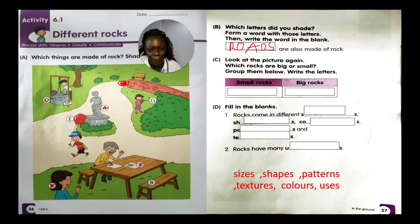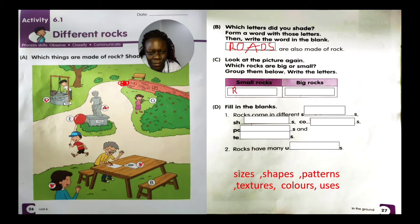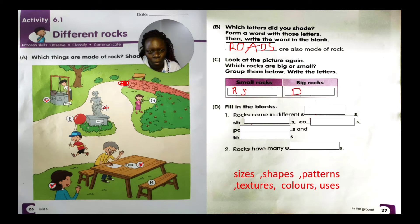Look at the picture again and group the rocks — which are big and which are small? Small rocks: R and S. Big rocks: D, O and A. Those are the big rocks and these are the small rocks.